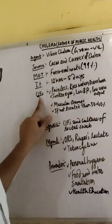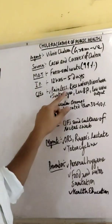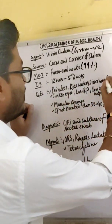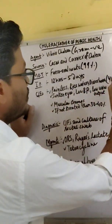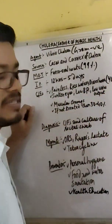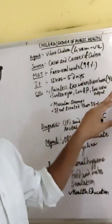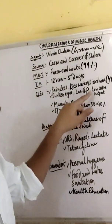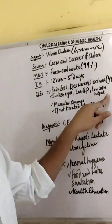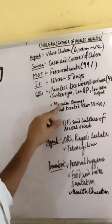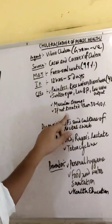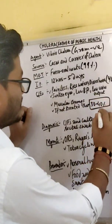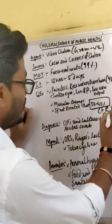The clinical features of Cholera include painless, watery diarrhea. Diarrhea can occur up to 40 times in Cholera patients. Other features include sunken eyes, low BP, low urine output, and muscular cramps. If not treated, the case fatality rate is 30–40%.